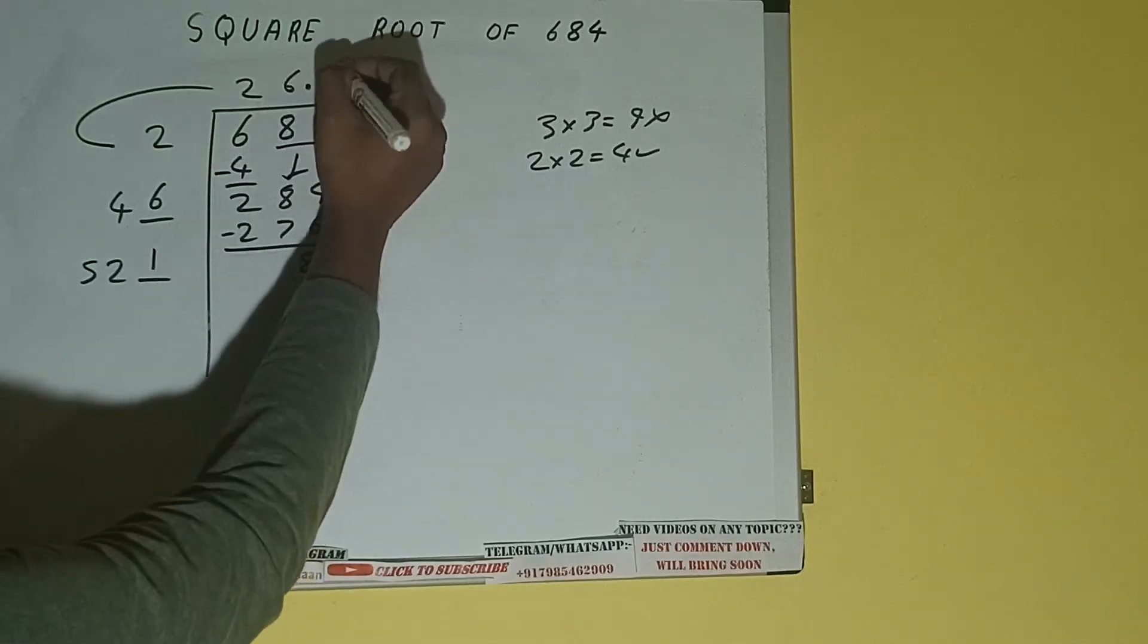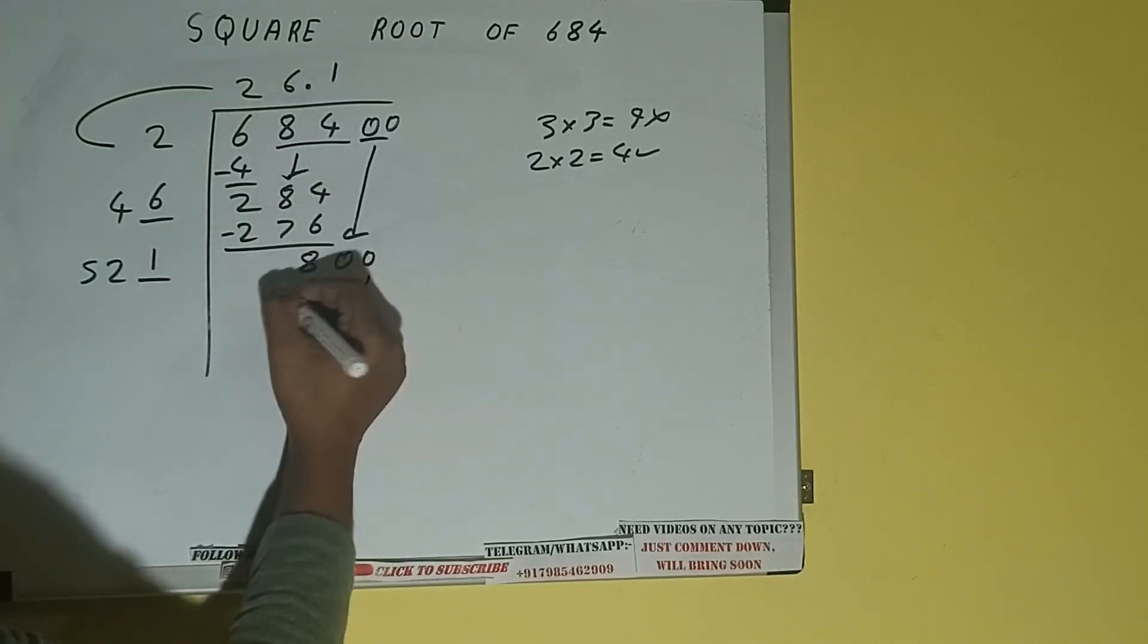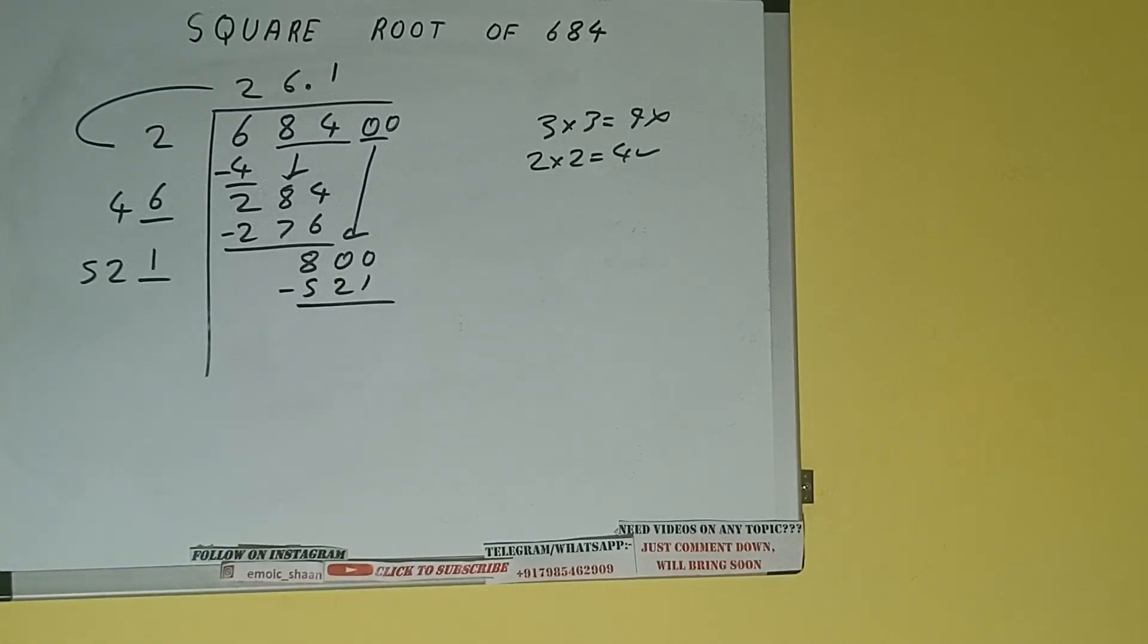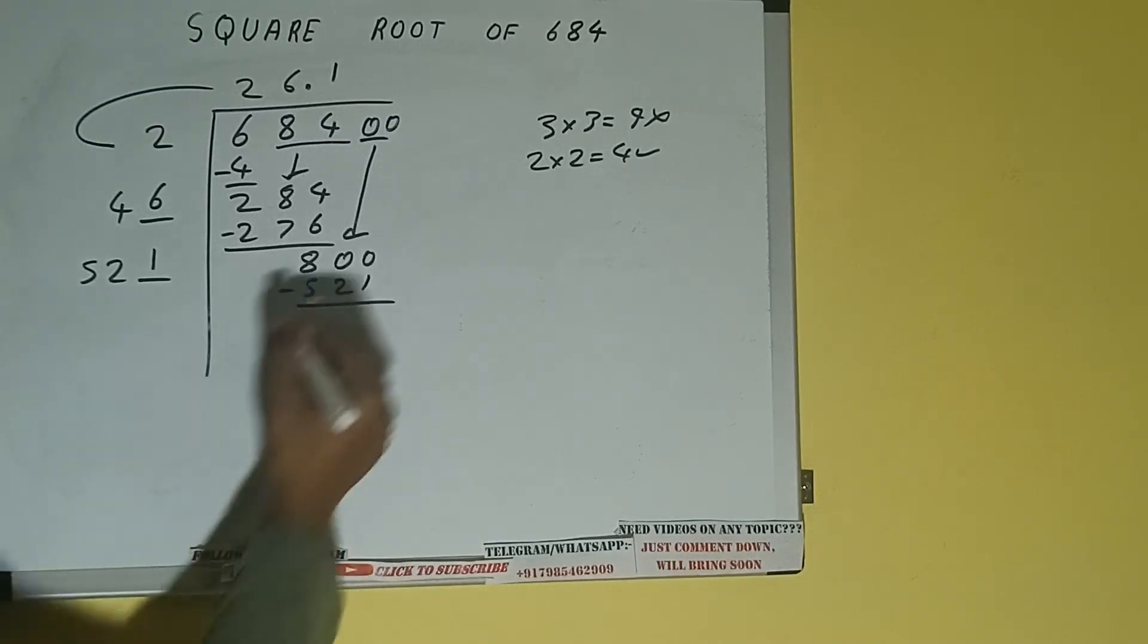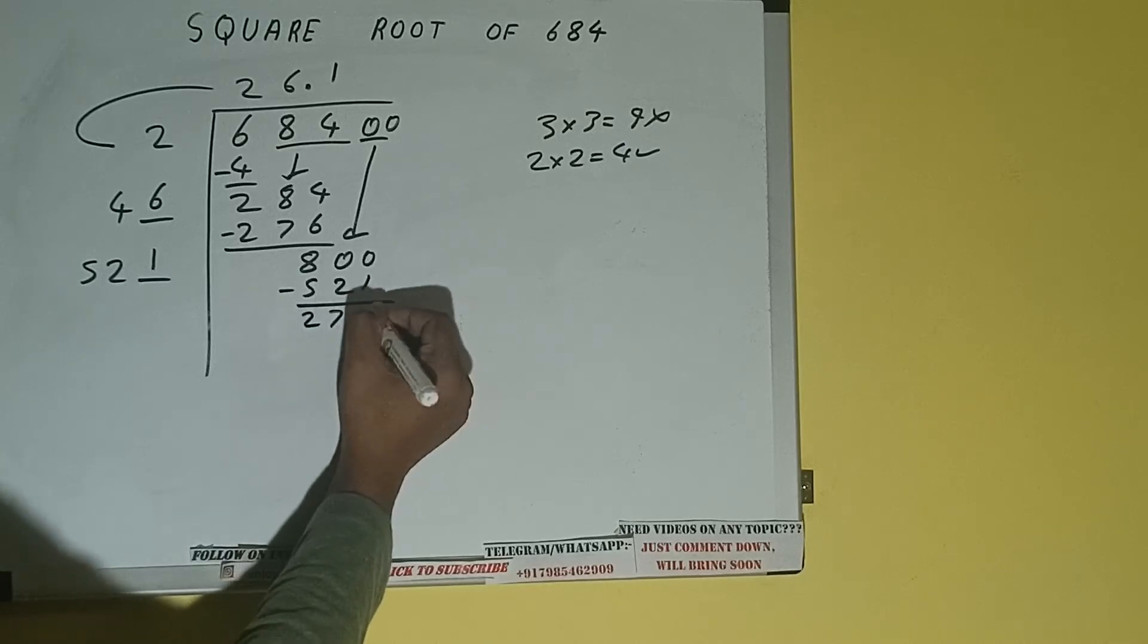Now we can try 1 here and 1 here: 521. Subtract, and we'll be left with 279.